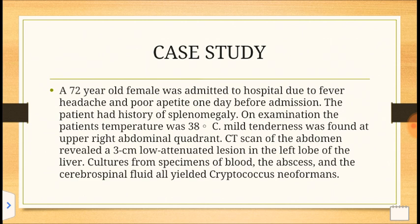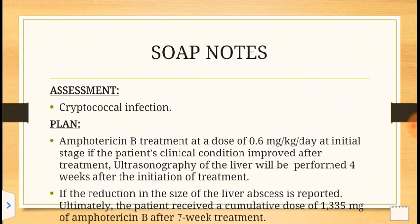She had a history of splenomegaly. Examination showed mild tenderness at the upper right abdominal quadrant, and a CT scan of the abdomen showed a 3 cm lesion in the left lobe of the liver. Specimens of blood, abscess, and spinal fluid all showed Cryptococcus neoformans, confirming a cryptococcal infection.